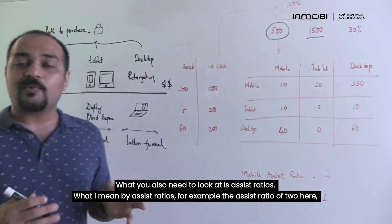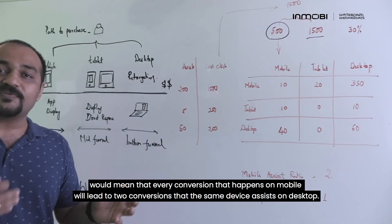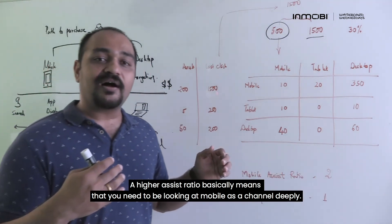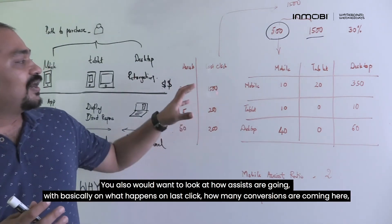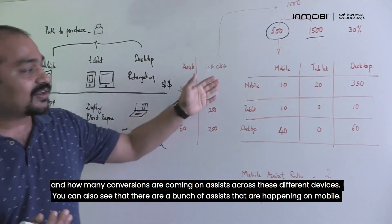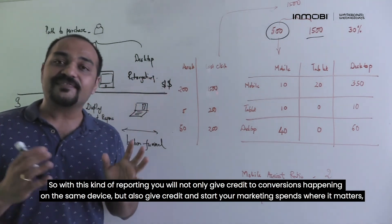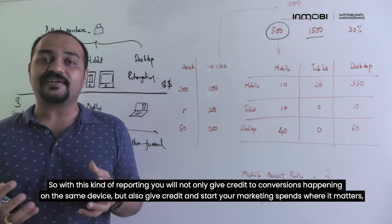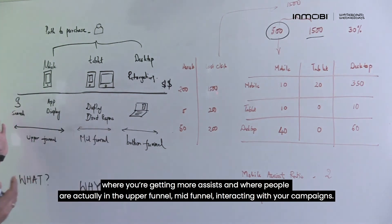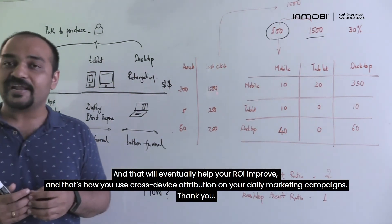If I was looking at these numbers, I would start spending more on mobile because it's driving more conversions on desktop. That's how you can utilize cross-device conversions to your advantage. We also need to look at assist ratios. An assist ratio of two, for example, means every conversion on mobile leads to two conversions that the same device assists on desktop. A higher assist ratio means you need to be looking at mobile as a channel more deeply. You can also look at how assists work on last click and how many conversions are coming via assists across different devices. With this kind of reporting, you give credit not only to same-device conversions, but also direct your marketing spend where it matters — where you're getting more assists and where people are in the upper and mid funnel. That will ultimately help your ROI improve, and that's how you use cross-device attribution in your daily marketing campaigns.